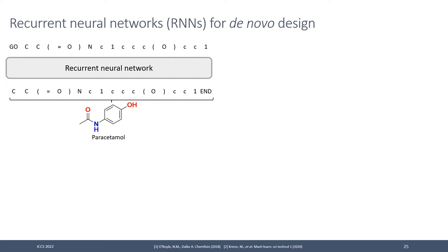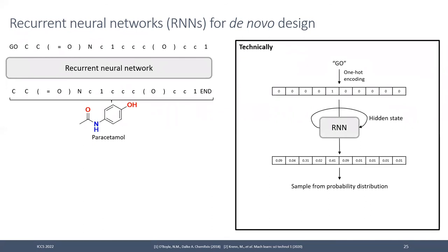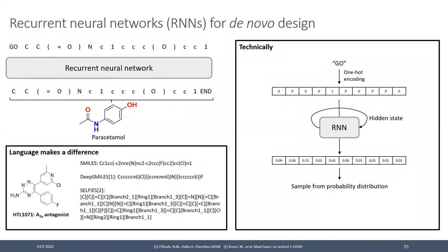At inference, you put in a start token and iteratively sample the predicted probability distribution. This works really well — you end up with almost 100% novel molecules and almost 100% validity in terms of SMILES strings. SMILES strings don't always translate to sensible molecules — you can have a nonsense string syntactically. There are also other languages: syntax variants like DeepSMILES, and a newer language called SELFIES which guarantees 100% validity, though with a less smooth traversal through chemical space.